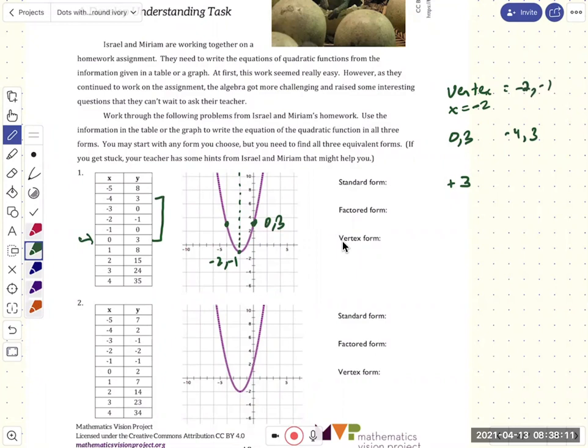Okay, so let's see if we can find the zeros. So when y is 0, so we get one of the zeros is at minus 1, 0. Oh, and the other one is at minus 3, 0. Okay, so if we have that, if we have minus 1, 0, and minus 3, 0, can we get the factored form?